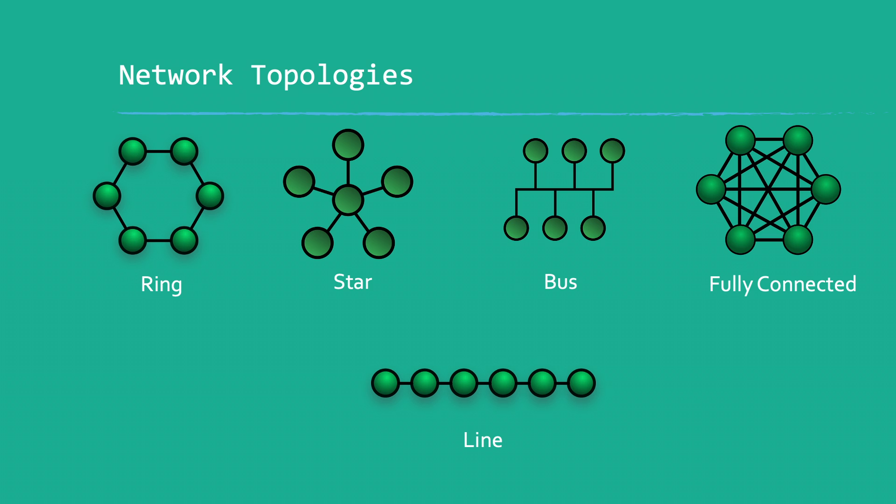Star topology is what we're all familiar with — all devices connect to one central device to access the network. That central device might be a router, and all phones and laptops connect to it, which then connects us to the internet. A bus network has just one line that all devices connect to — still in use but not typical for home networks. A fully connected network is where every device is connected to every other device, great for reducing downtime but very resource intensive.